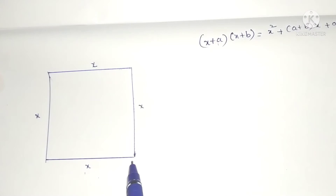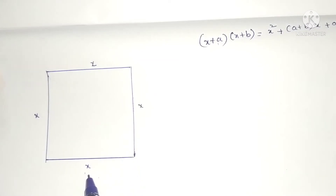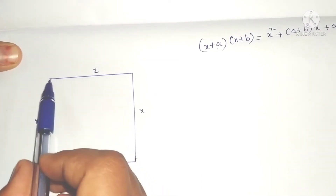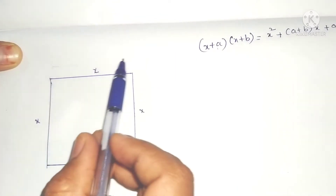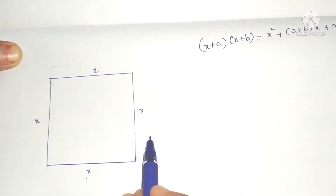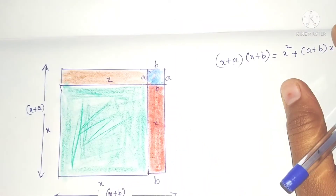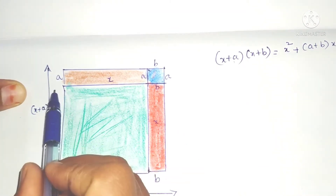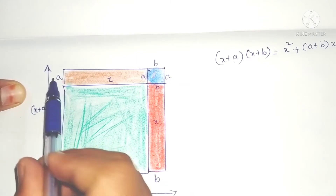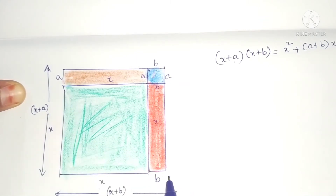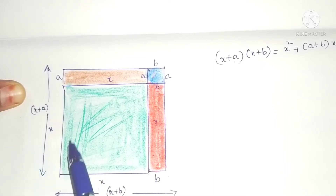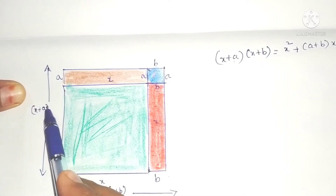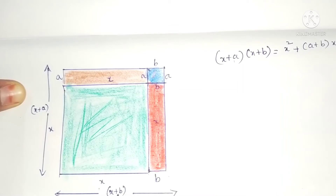For that, a square is drawn of x units. To this, I am adding here a units and here b units. So after adding a units here and b units here, this total length is x plus a, and this total length is x plus b.